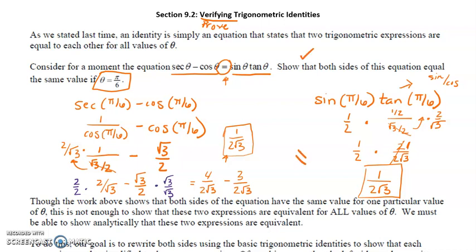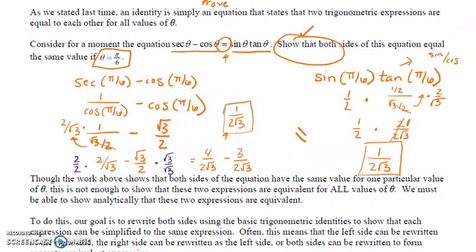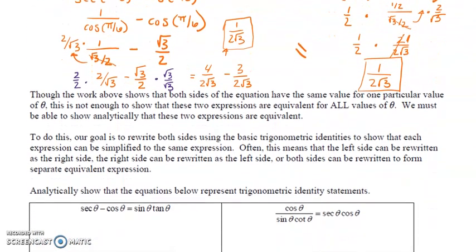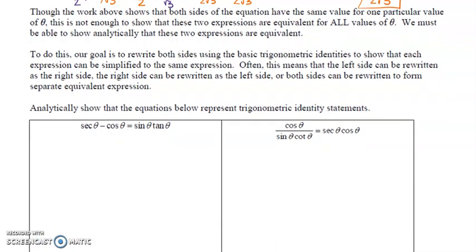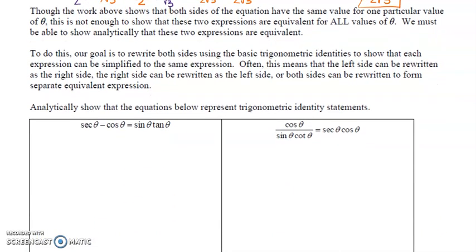We just proved algebraically that the left-hand side and right-hand side are exactly the same. These are strategies we'll use throughout examples. However, what we did was only prove they're equal at one particular angle on the unit circle. That's not necessarily enough to say they're always the same — yes, they match at that angle, but what about any other angle?